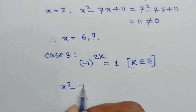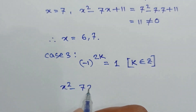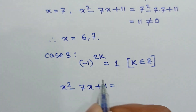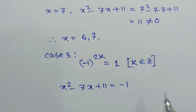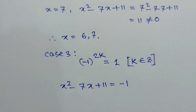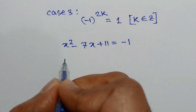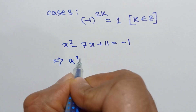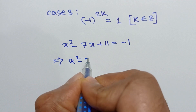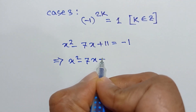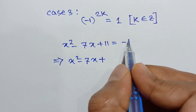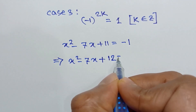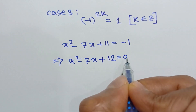The third case for which the result will be 1 is when (-1) to an even power equals 1. So we set x² - 7x + 11 = -1. Taking -1 to the left side, we get x² - 7x + 12 = 0.